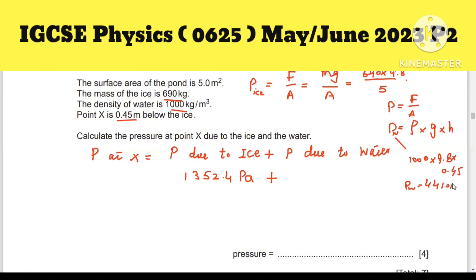So you will get the final result, which is 5762.4 pascals. Write it in two significant figures, so 5800 pascals. This is the right answer.